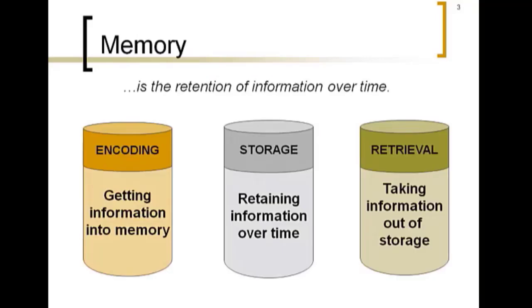So what do I mean when I say memory? A general definition would be the retention of information over time. This is very general because we could take it in many different directions. Retention over time — well, how long? It could be a very short period or a long period. Are we talking about verbal information, visual information, auditory, even smells and tastes? This general definition encompasses many different areas, but there is a basic process: with memory you go through three stages — encoding, storage, and retrieval.